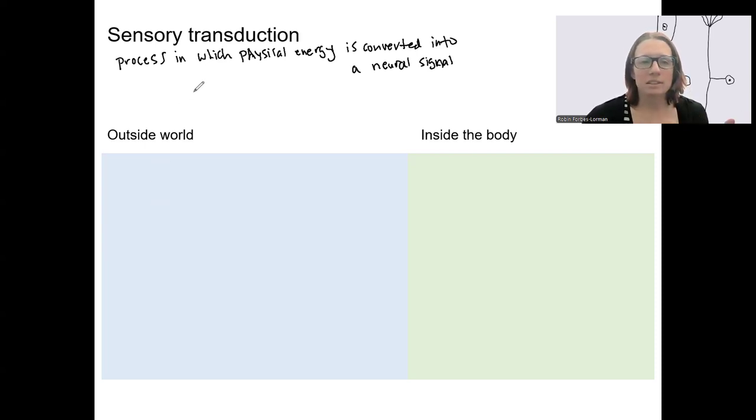Another way of saying this is this is going to be taking a stimulus and resulting in a change in membrane potential. Changes in membrane potential are what initiate neural signals, right?